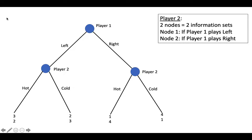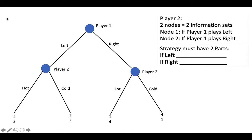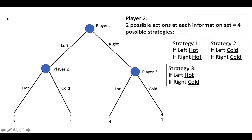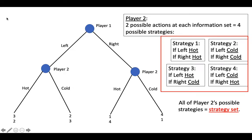Now let's consider the game from player 2's perspective. Player 2 has two possible nodes, meaning they have two possible information sets in the game. Player 2 will find themselves at the left-hand node if player 1 chooses left, and at the right-hand node if player 1 chooses right. Because player 2 makes their strategy before they play the game, before player 1 makes their choice, their strategy needs to include two parts: what to do if player 1 chooses left, and what to do if player 1 chooses right. Player 2 has two possible actions at each node — hot and cold — resulting in four possible strategies: always play hot, always play cold, play hot if left and cold if right, and play cold if left and hot if right. These four strategies together are called a strategy set.